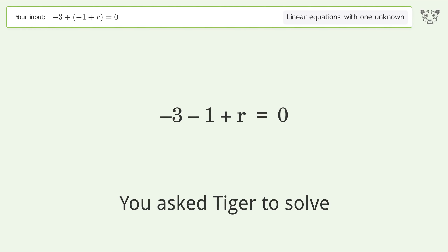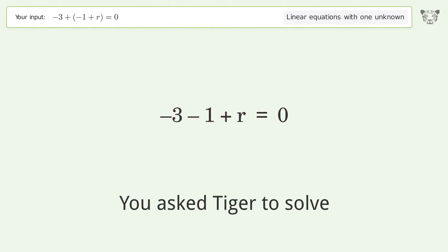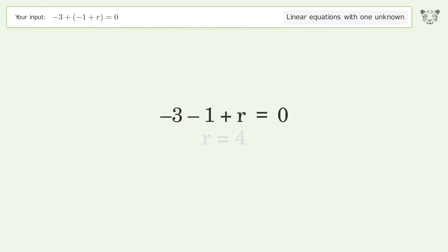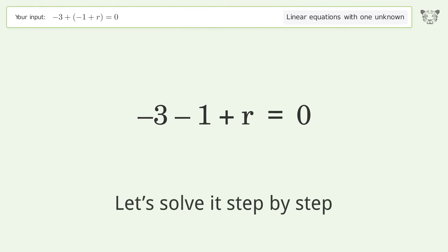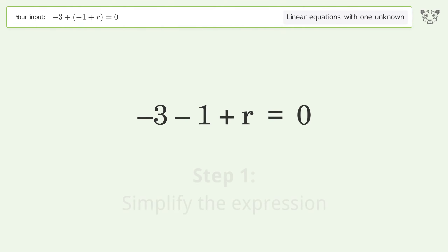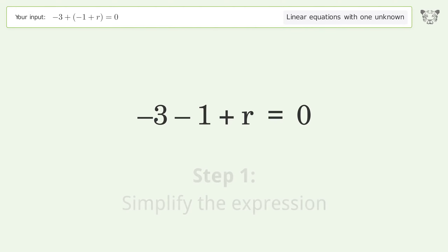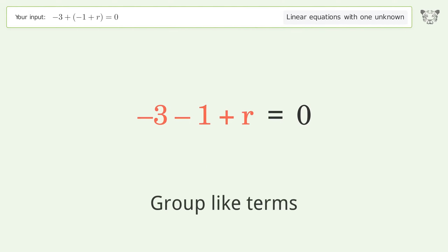Tiger is asked to solve a linear equation with one unknown. The final result is r equals 4. Let's solve it step by step — simplify the expression and group like terms.